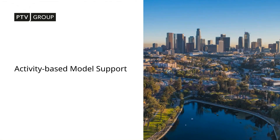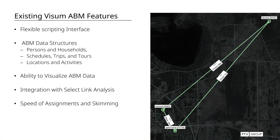We're going to dive into our first topic: support for activity-based models. As a refresher, Vezoom is already a great platform for supporting ABMs, with a flexible and powerful scripting interface for integrating ABMs and manipulating data. Vezoom also has built-in data structures for storing typical ABM data — population data such as persons and households, activity types and locations, and travel information like trips, tours, and schedules. You can visualize tours and see trip purposes, modes of transportation, and travel times.